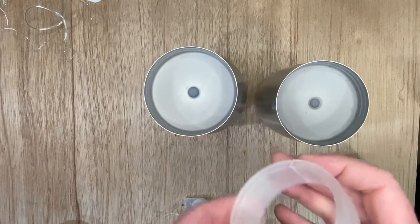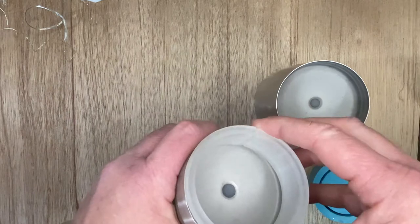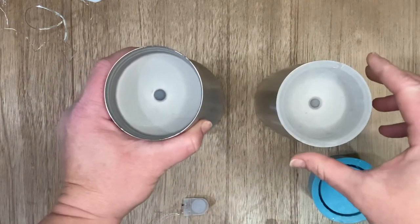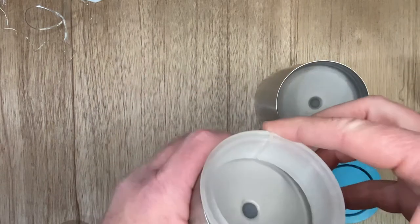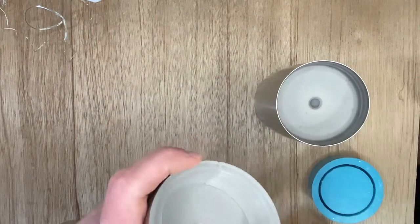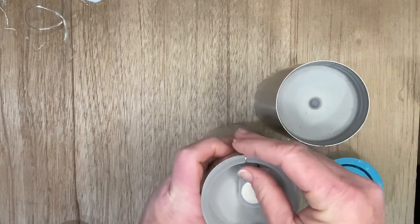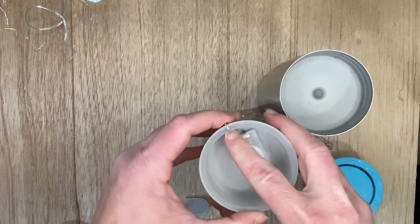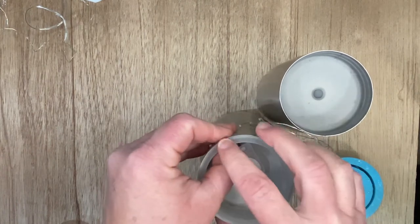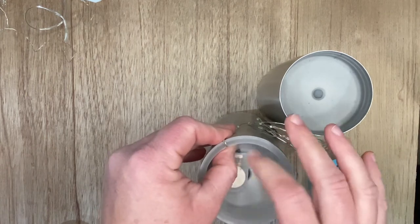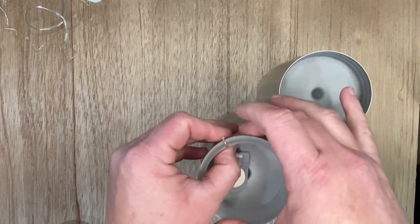So we came up with this insert. It'll fit the 30 ounce and the 20 ounce and it gives you a little channel here where you can run your lights. It just sits right on there and fits right into that groove. Now you've got a safe place to run your wires, you don't have to worry about them shorting out, you don't have to worry about them rubbing on the metal.